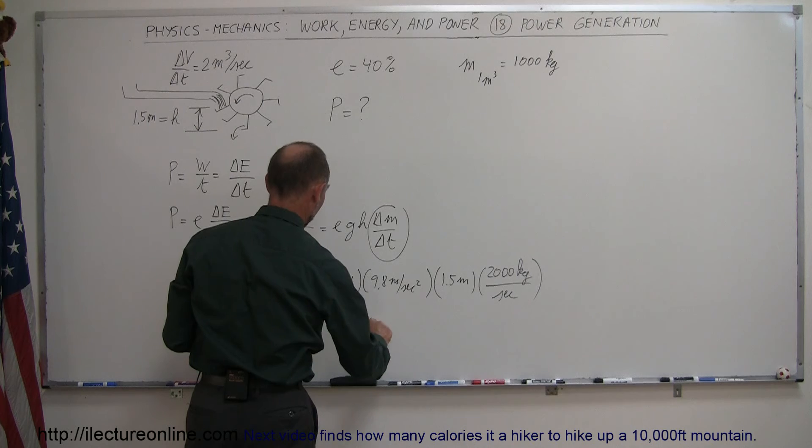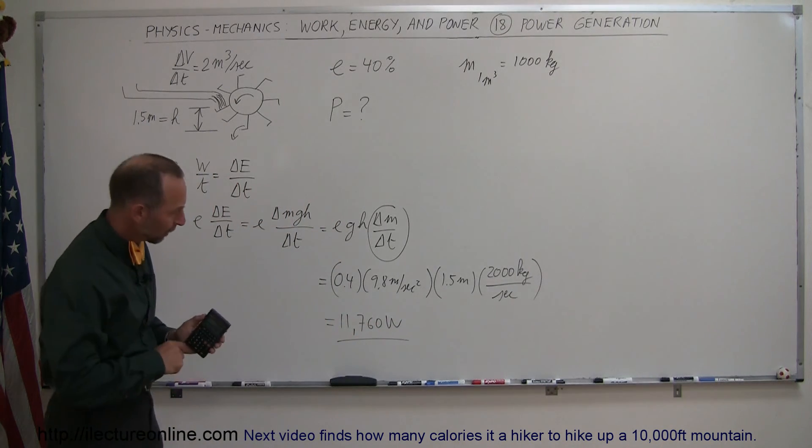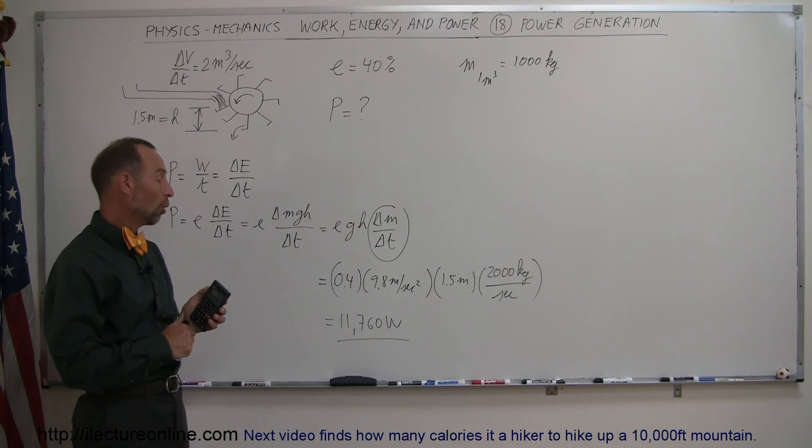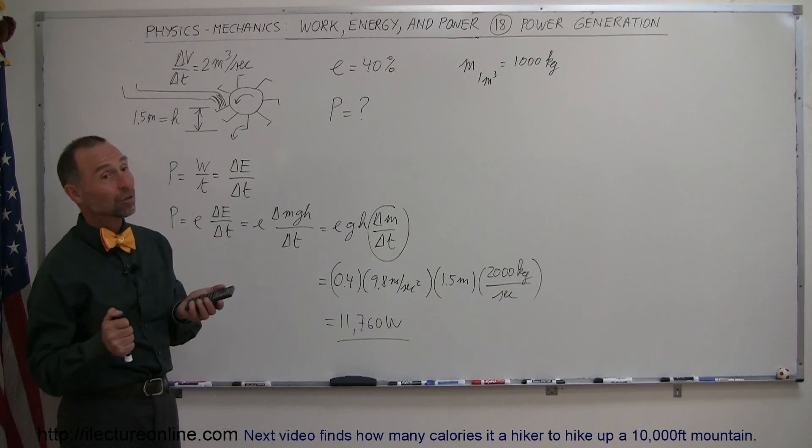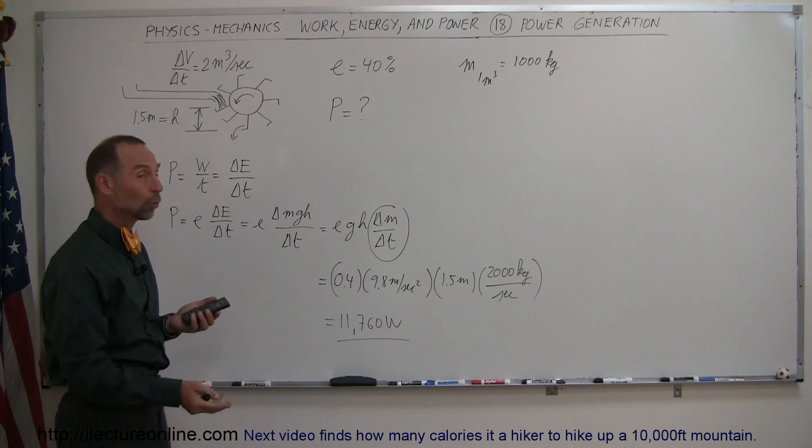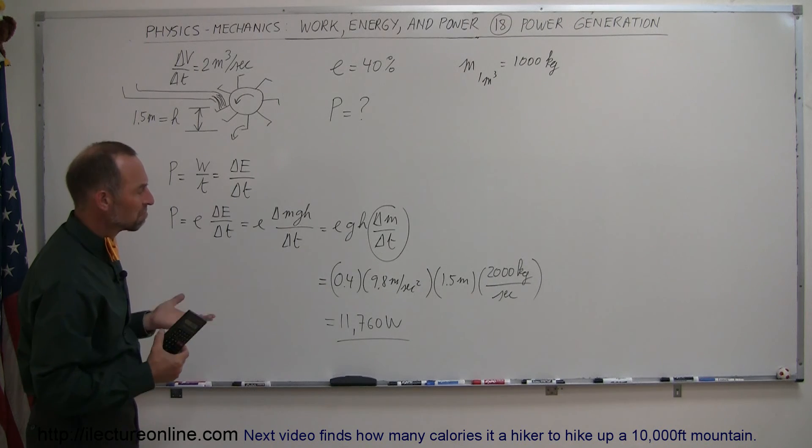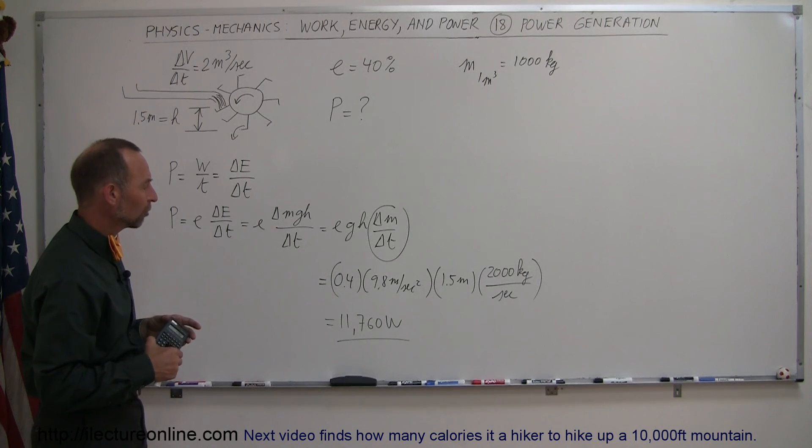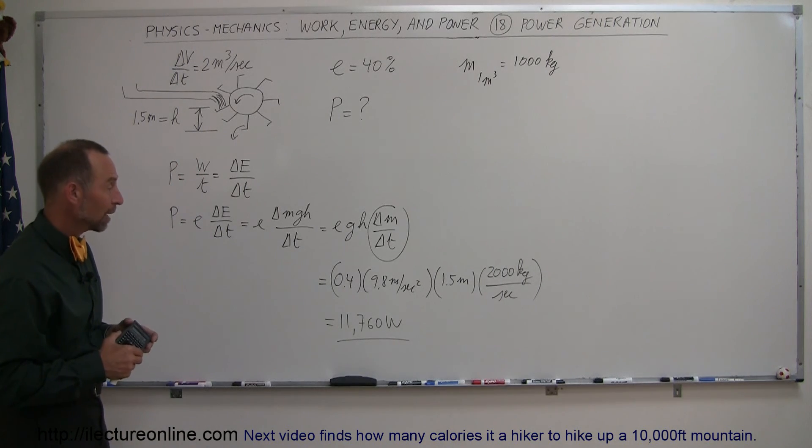11,760 watts. So that will power typically about 10 or so homes. I think a home typically needs about 1,000 watts. Of course, at peak usage with air conditions and all that, it's way more than that. But on average, over a 24-hour period of time, I would say most houses use about 1,000 watts per hour.